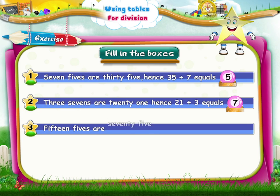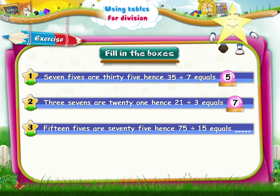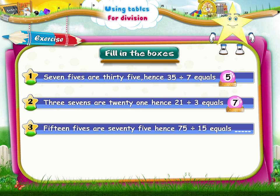Fifteen fives are seventy-five. Hence, seventy-five divided by fifteen equals five.